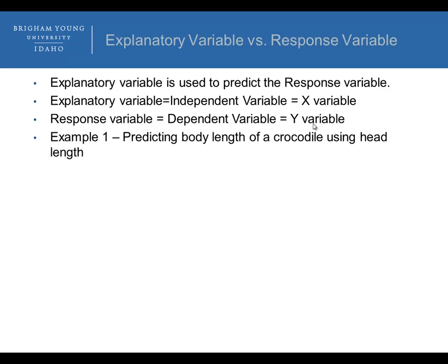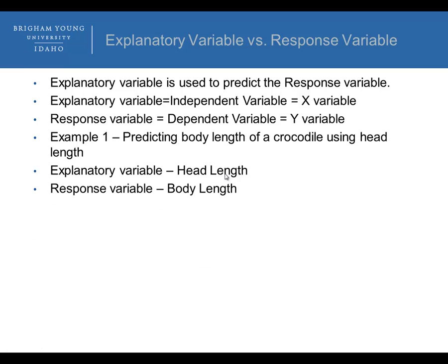Example one: we want to predict the body length of a crocodile using the head length. The explanatory variable is head length, because that's what we're using to predict. The response variable is body length, because that's what we're trying to predict. So we're using head length to predict body length — the explanatory variable is head length and the response variable is body length.